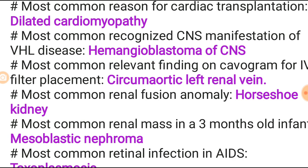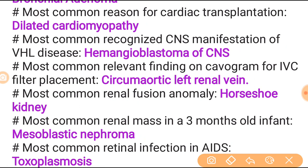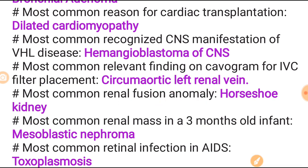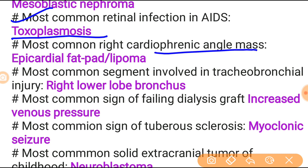Most common recognized CNS manifestation of Von Hippel-Lindau disease is hemangioblastoma of the CNS. Most common relevant finding on cavogram for IVC filter placement is circumaortic left renal vein. Most common renal fusion anomaly is horseshoe kidney. Most common renal mass in a three-month-old infant is mesoblastic nephroma. Most common retinal infection in AIDS patients is toxoplasmosis.